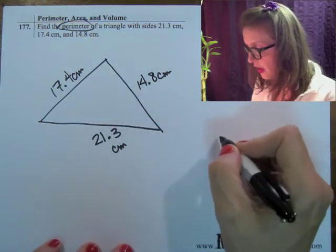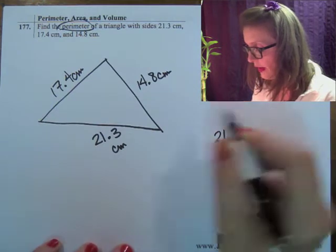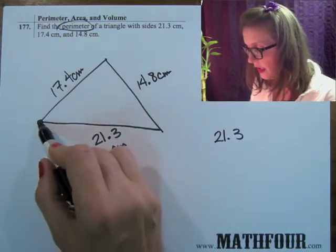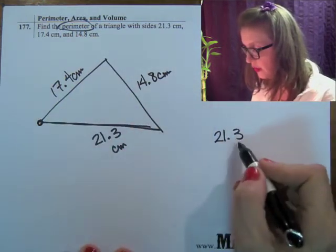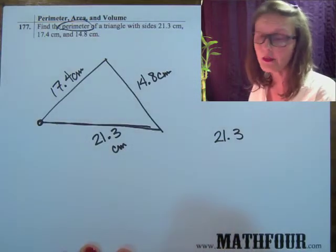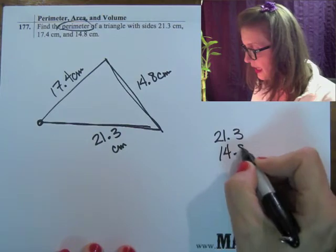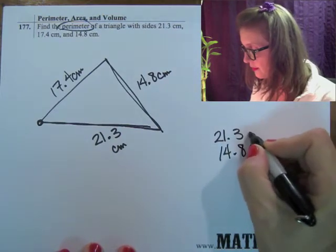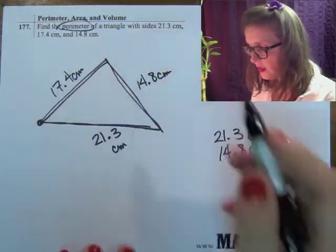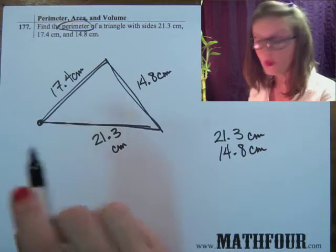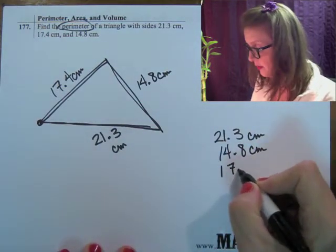So we look at this and go, okay, so I walk all the way around. So I start here and I walk along. I go 21.3 centimeters. I'm kind of small. Walk this way, I go 14.8 centimeters. And I walk this way to get back to my original starting point at 17.4 centimeters.